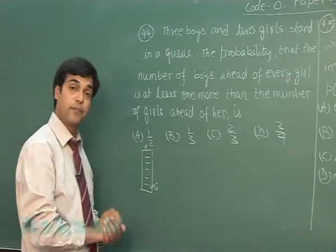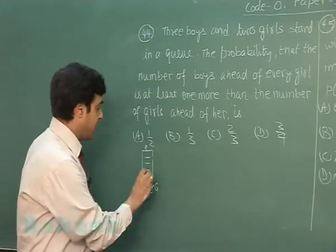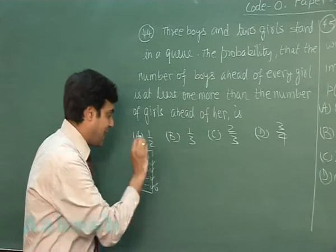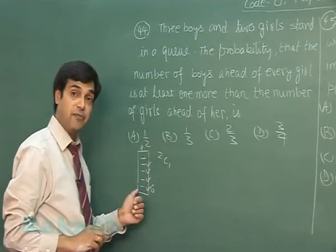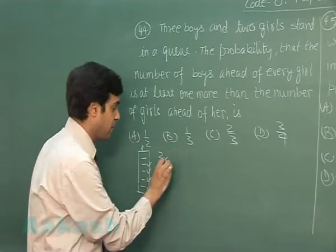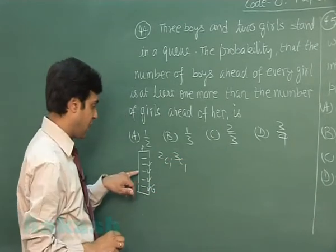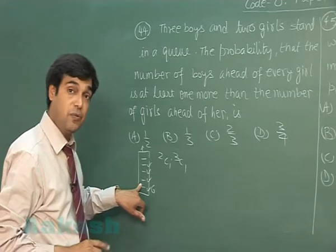Now the next girl can be placed at any of these three positions. So the possibilities: 2C1, we can select one girl for this last position, into 3C1, one position from these three for the second girl, into factorial 3. Correct?